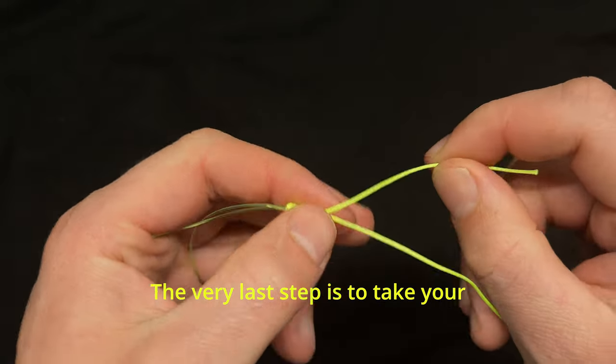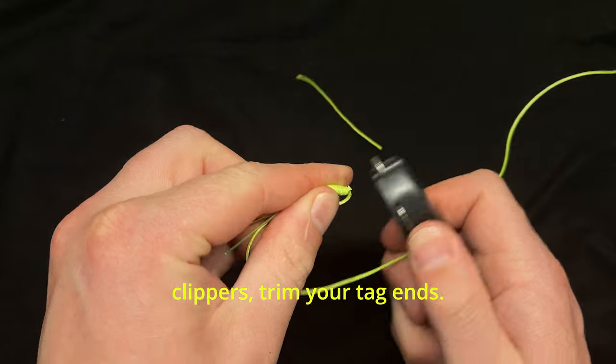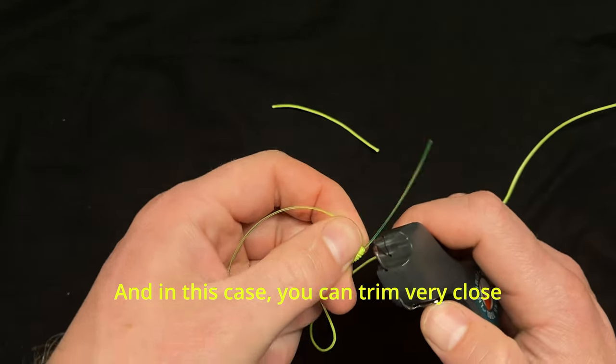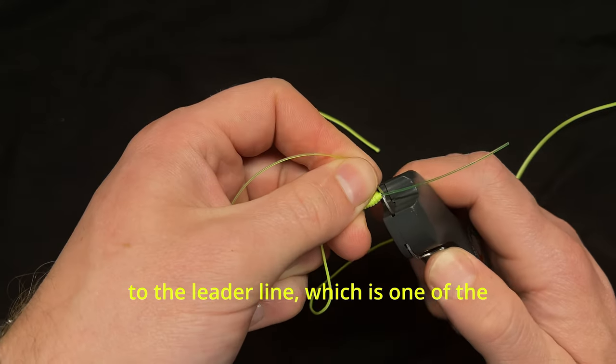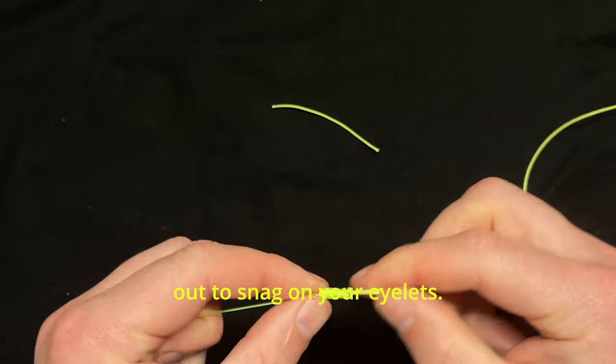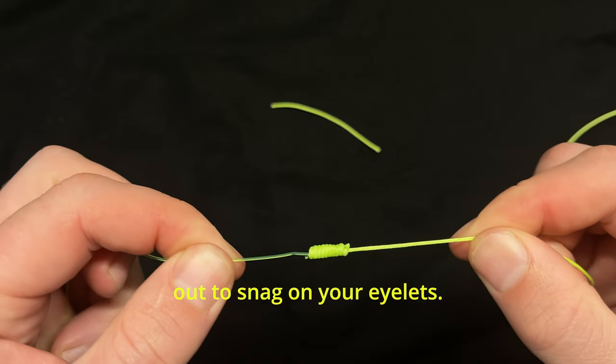The very last step is to take your clippers and trim your tag ends. In this case you can trim very close to the leader line, which is one of the strengths of this knot. You don't have heavy leader line hanging out to snag on your eyelets.